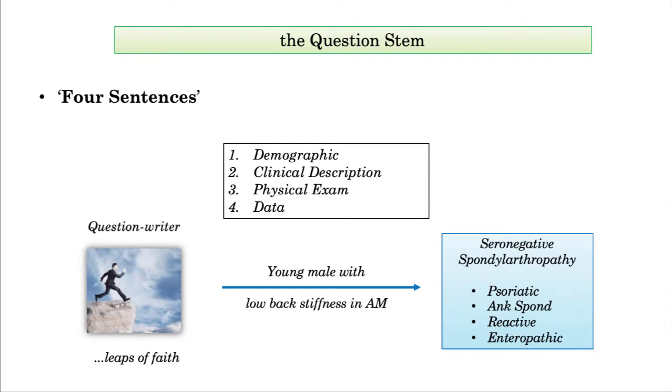By way of example, when the question writer offers the description of a young male with low back stiffness in the morning, the leap of faith is that you will know and interpret the symptom as a presentation for a seronegative spondyloarthropathy. They may or may not include other descriptors, but this description may be the only language offered toward the second and third order derivatives. You need to accept these implicit statements as leaps of faith and go where the question writer takes you.